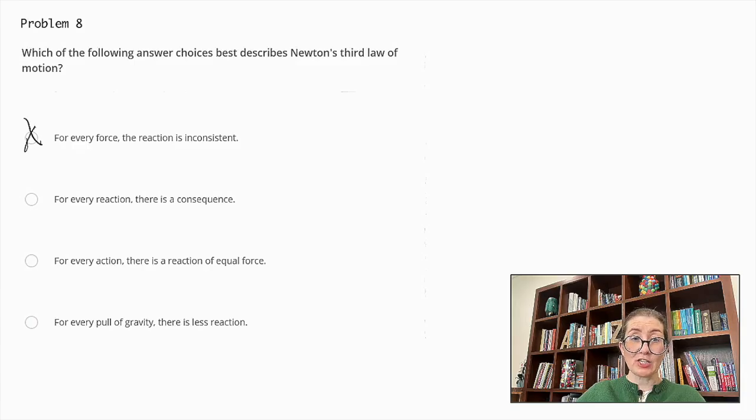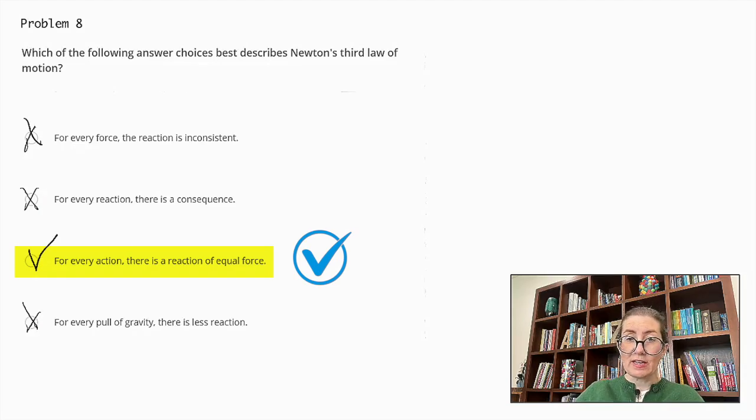Next, for every reaction there is a consequence. This does not accurately describe the equal and opposite nature of forces described by the third law. For every pull of gravity there is less reaction. And that is incorrect because it describes the relationship between forces incorrectly. Newton's third law specifies that forces are equal and opposite, not lesser. So the correct answer is for every action there is a reaction of equal force. This is the exact statement of Newton's third law of motion. It means that for every force exerted on an object, there is an equal and opposite force exerted by that object.